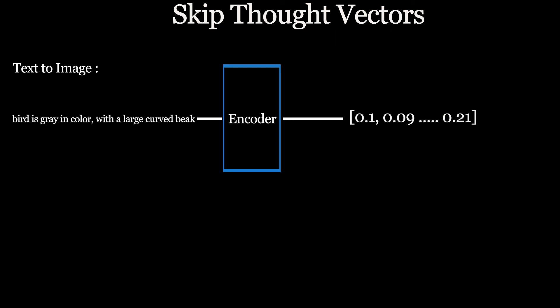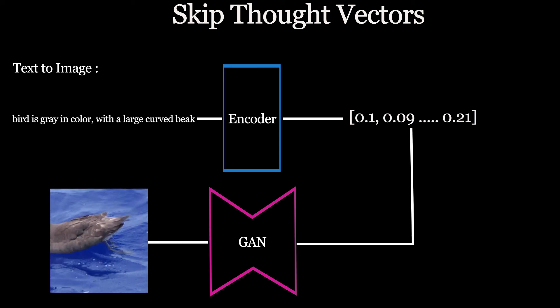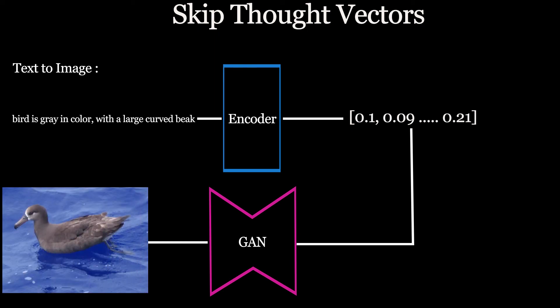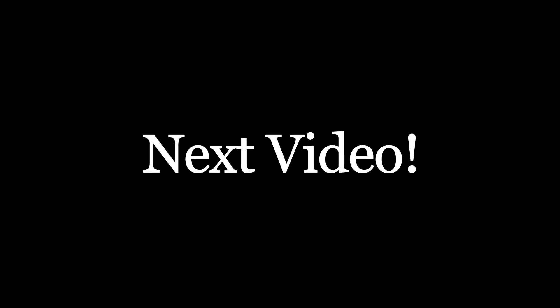And this is how skip thought vectors work. Text-to-image translation is a perfect application for this method, where the text description gets converted into a fixed length vector representation, and then the generative model uses that representation to generate images. Looks and sounds cool, right? But to me this sounds like a story of the next video. So stay tuned and thanks for watching.